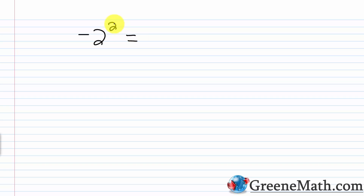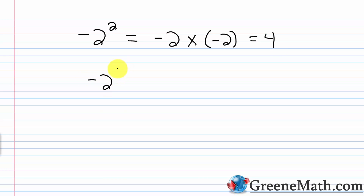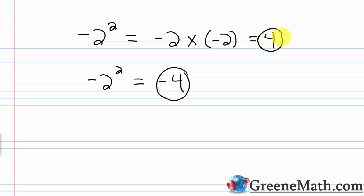Let's think about this with an example. Pretend your teacher asks: what is negative 2 squared? You write negative 2 squared — no parentheses — and from your knowledge of exponents you say I have two factors of negative 2, so negative 2 times negative 2, which is 4. Then you pull out your calculator, type in negative 2 to the power of 2, and your calculator spits out negative 4. You're thinking: why did my calculator say negative 4 when I think the answer is positive 4?